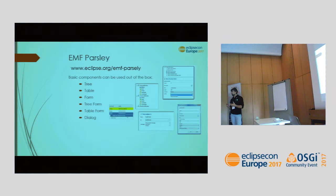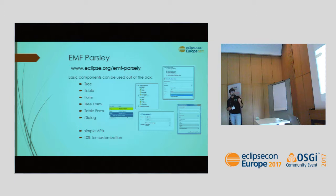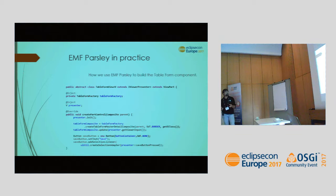To be in control of EMF we use EMF Parsley, our project. EMF Parsley lets you use EMF while hiding all the details. It comes with several components — trees, tables, forms, and combinations of them — with simple APIs, a powerful DSL for customization, and Google Guice for injection. Let's see an example of how to use a component of EMF Parsley — in this case, a table-form.